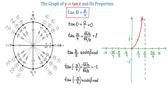Now, on the graph, I will first plot the point negative pi over 4 and negative 1. And at negative pi over 2, we will have another vertical asymptote. The graph between negative pi over 2 and 0 will have this shape. So, as we get closer to negative pi over 2, the function approaches negative infinity.